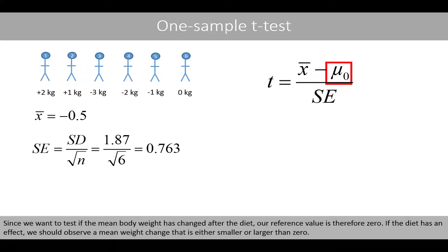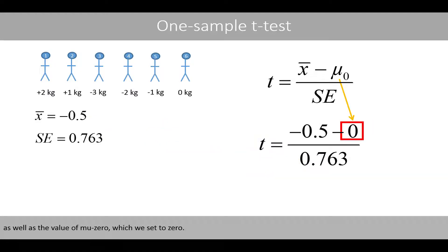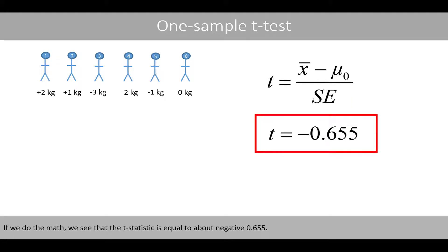Since we want to test if the mean body weight has changed after the diet, our reference value is therefore 0. If the diet has an effect, we should observe a mean weight change that is either smaller or larger than 0. Let's plug in the values for the sample mean, the standard error, and the value of mu-zero, which we set to 0. If we do the math, we see that the t-statistic is equal to about negative 0.655.